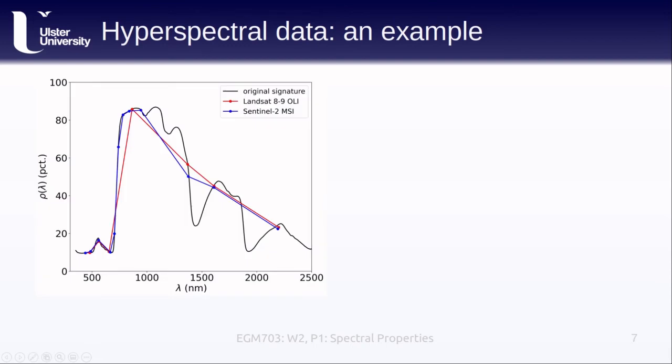If we take a minute to look at this plot here, we see a spectral signature for some type of vegetation, I think it was an oak leaf in black, as well as what the Landsat 8 or 9 operational land imager and the Sentinel-2 multispectral imager sensors would see. These are the red and blue curves here. Note that the multispectral sensors capture the general shape of the curve, but there's a number of very pronounced absorption bands, for example here at about 1400 nanometers and at 1900 nanometers that are missing from these curves.